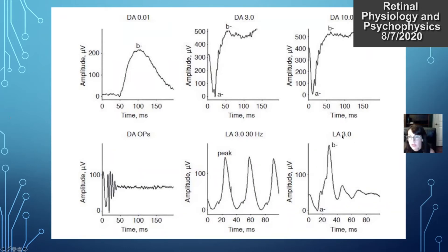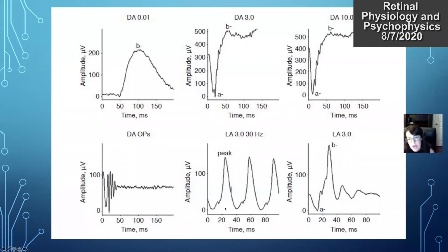Light adapted ERG looks more at the cone response. The A wave is elicited more from cones and the B wave from bipolar cells. The flicker ERG primarily looks at cone response because rods do not detect flickers of light — they use 30 Hz and determine the amplitude. Implicit times are also looked at, and a delayed implicit time is more indicative of a global retinal dysfunction.